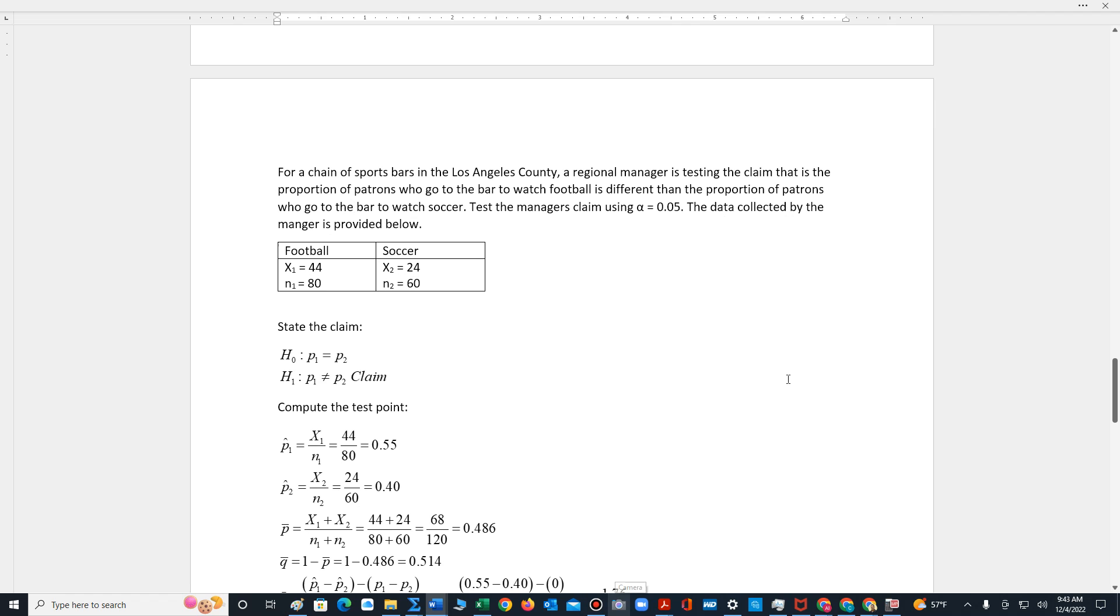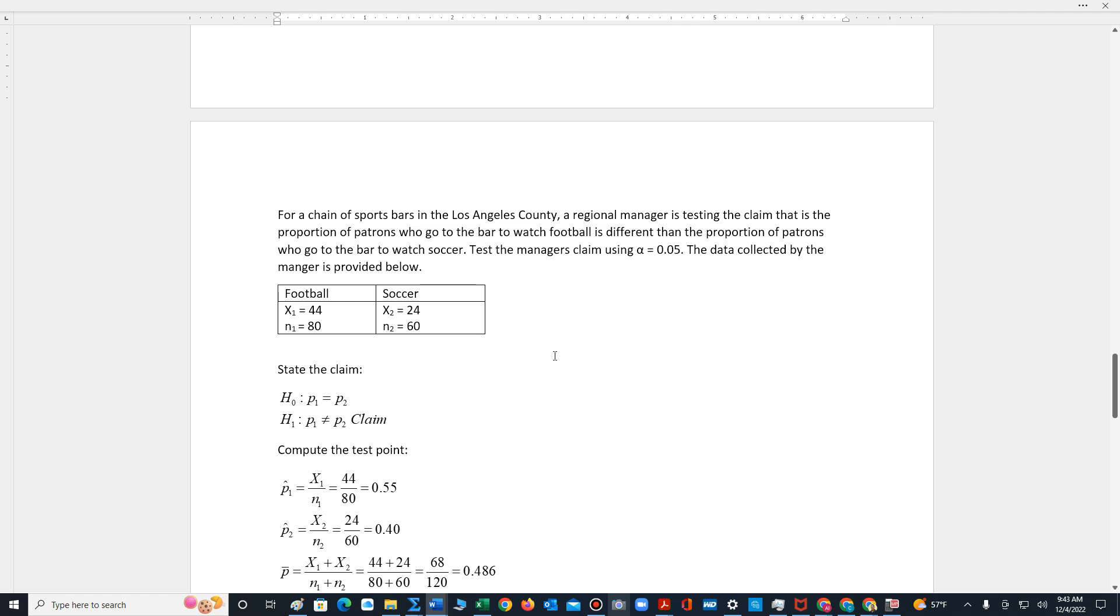In this video we are demonstrating how to perform a test for the difference between two proportions. It's a z-test. For a chain of sports bars in Los Angeles County, a regional manager is testing the claim that the proportion of patrons who go to the bar to watch football is different than the proportion of patrons who go to the bar to watch soccer. Test the manager's claim using alpha equals 0.05.